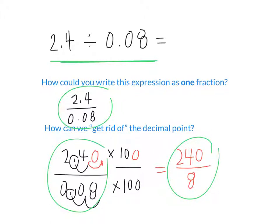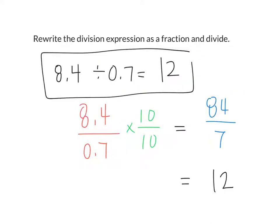When I multiply something by a version of one, it doesn't change the value. That's why we don't need to undo. Now, can we simplify this fraction? If I have 240 divided by 8, how many wholes do I have? 30. So what is 2.4 divided by 0.08? 30.